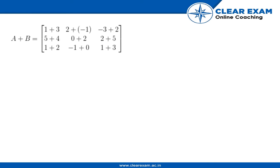This is a new slide and we have found out A plus B, that is four, one, minus one, nine, two, seven and finally in the third row, we have three, minus one, four. So that is our A plus B. Now, let's move to the next part.